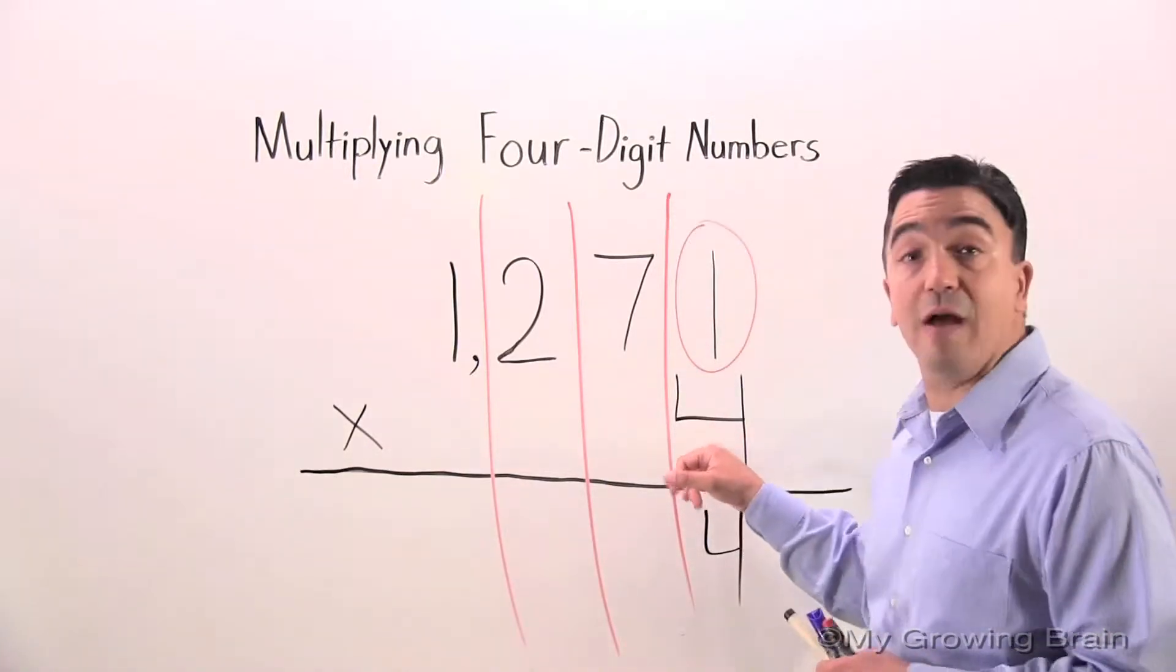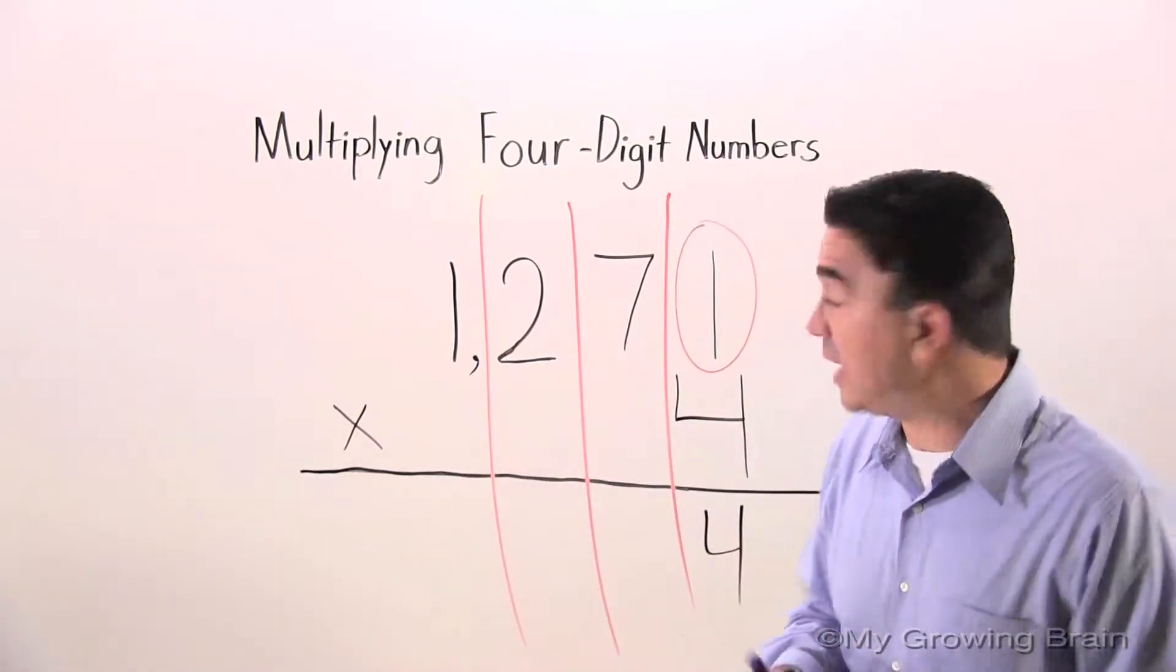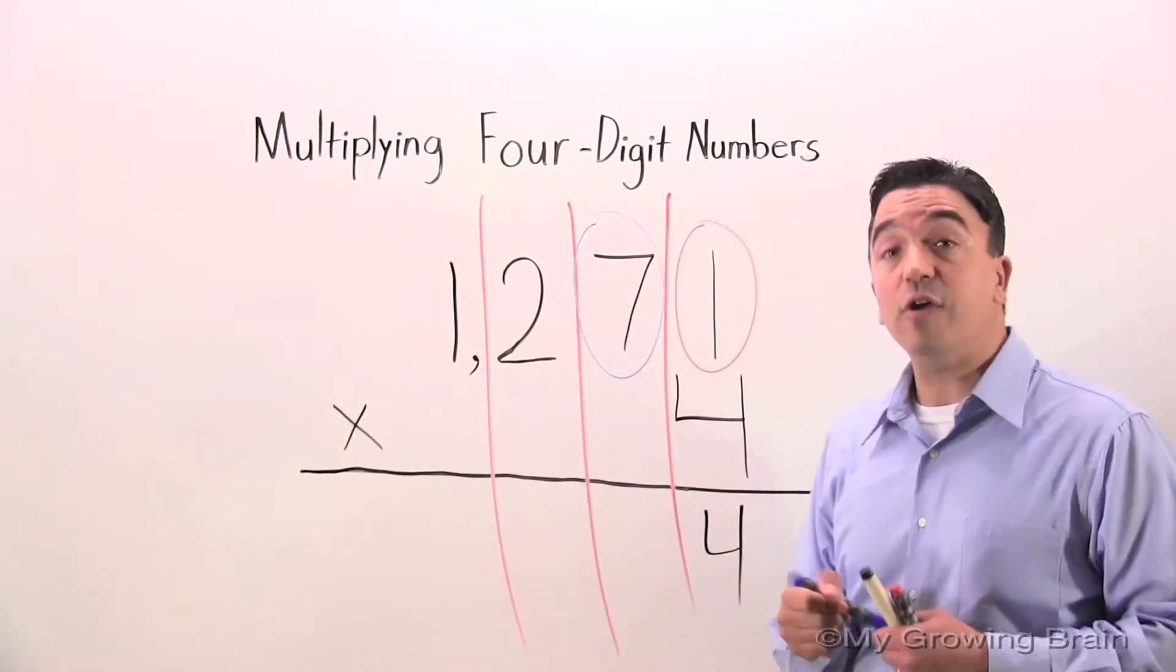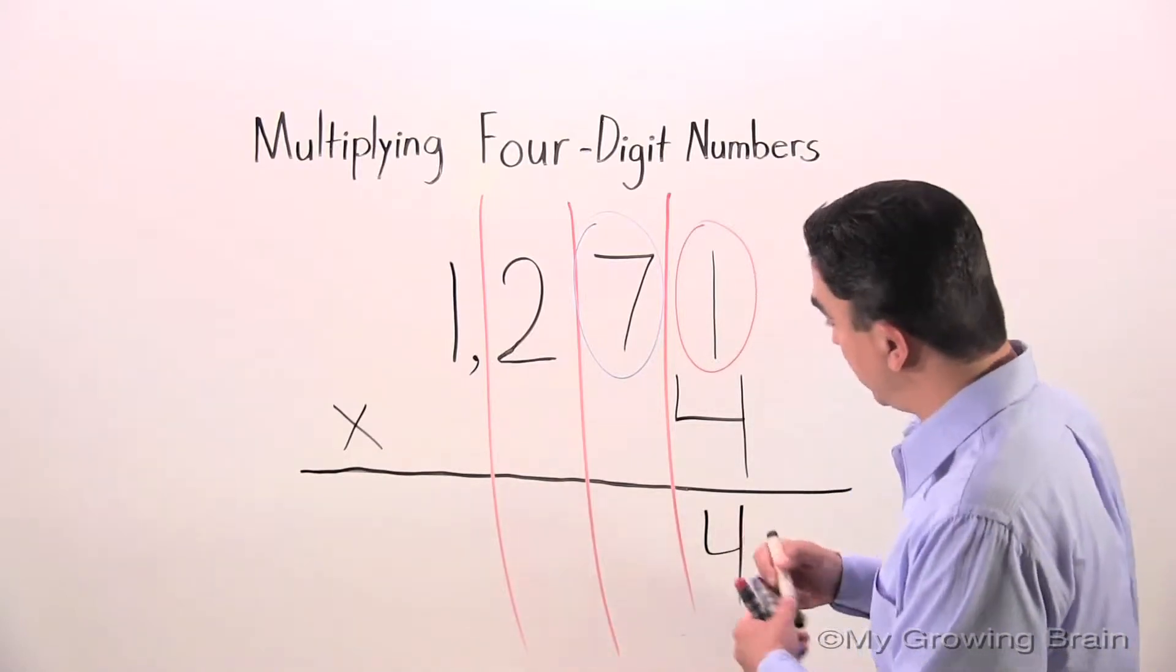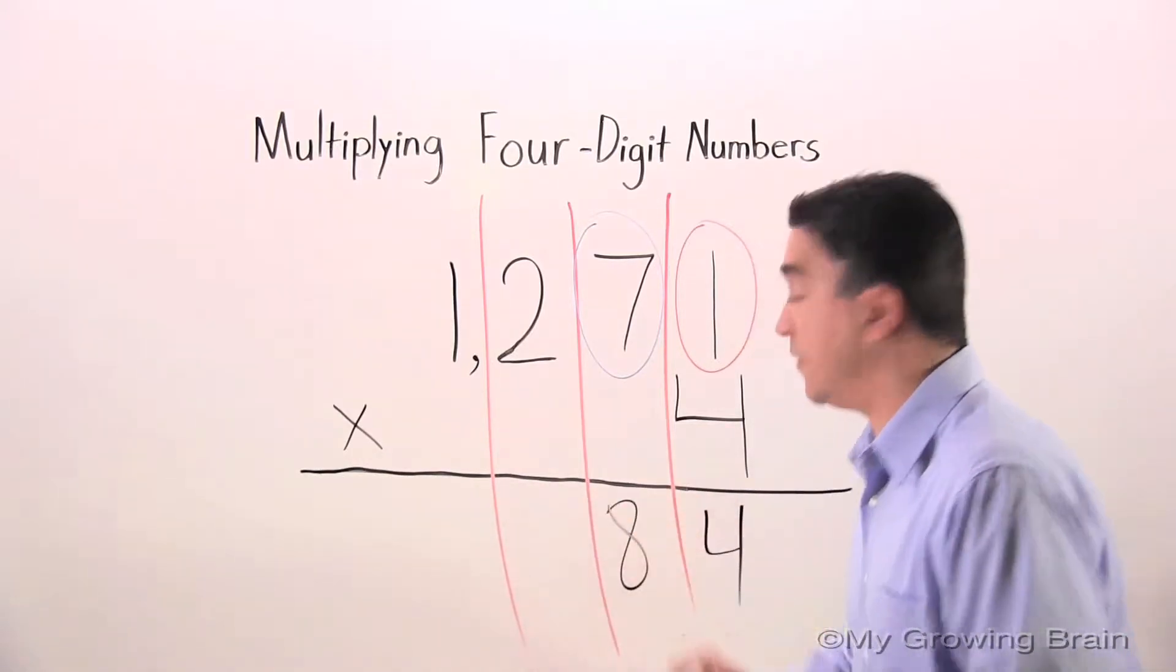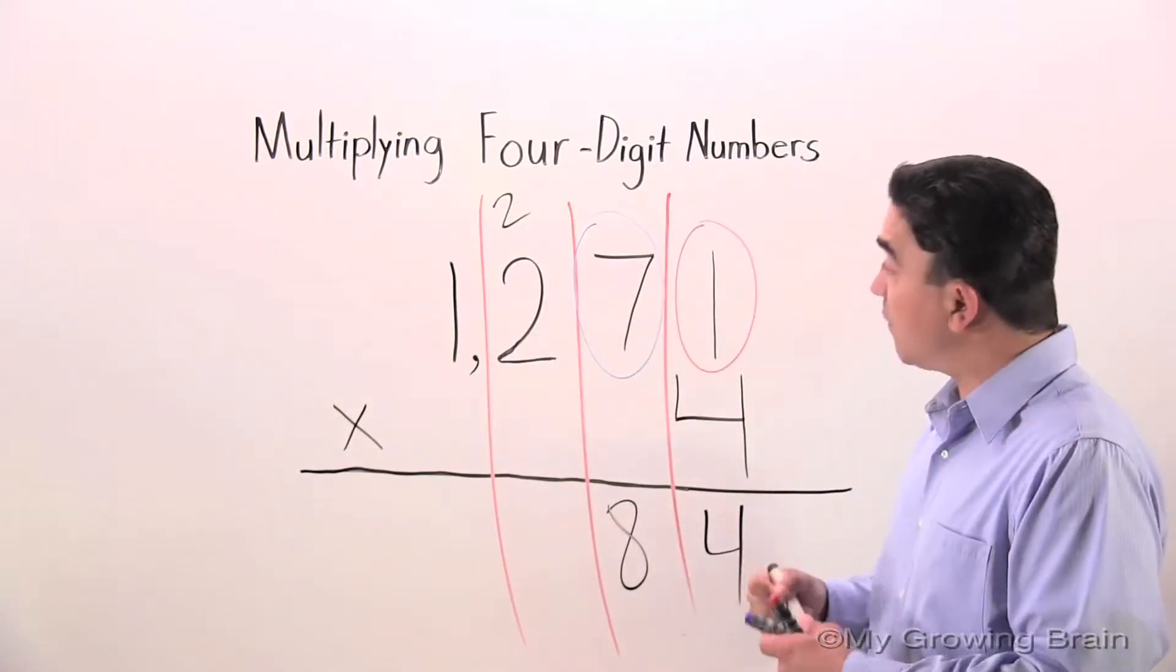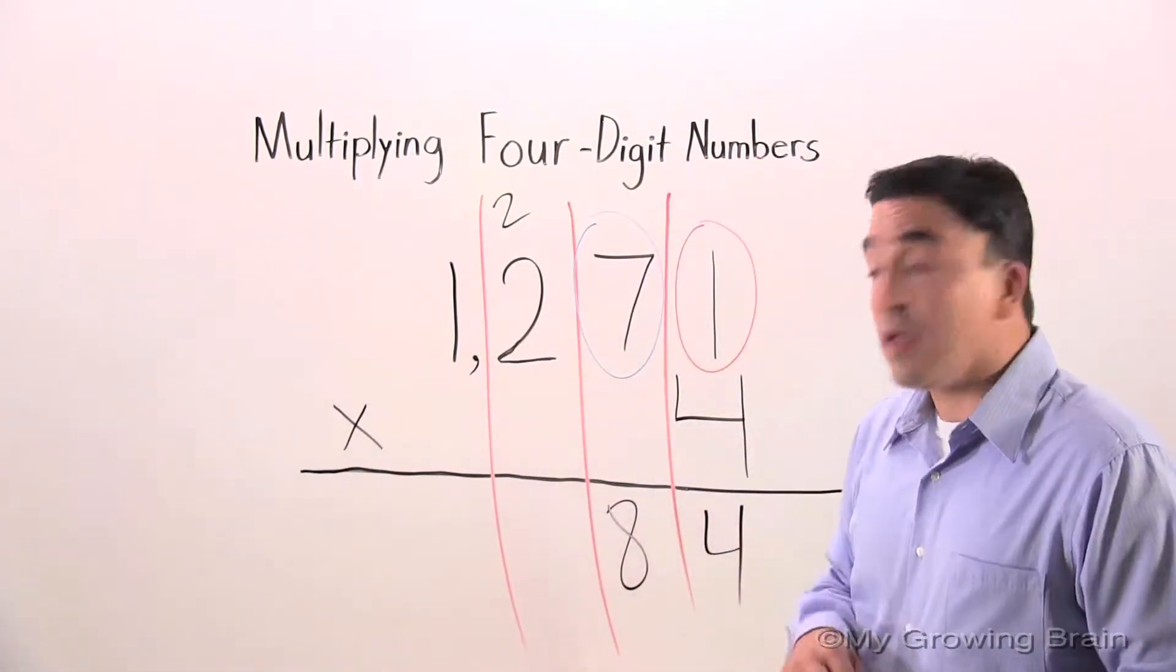So we can just jump over and multiply four times seven. As a reminder, I'm going to circle the seven. Four times seven is 28. So what I'm going to do is I'm going to write the eight down here. And since it's a two-digit number, I'm going to regroup the two. Now I'm going to move over to the next place value.